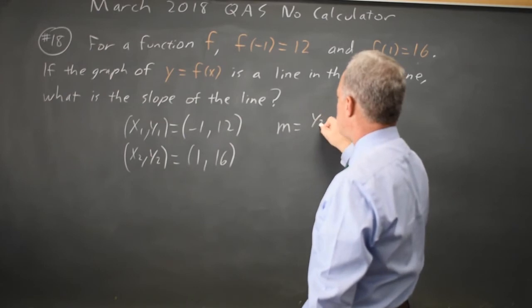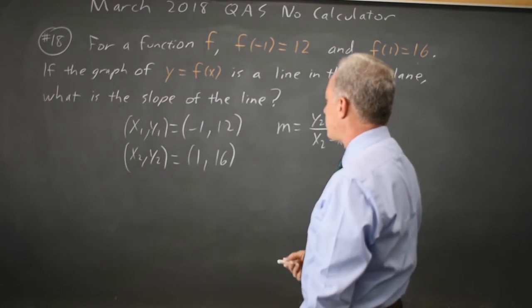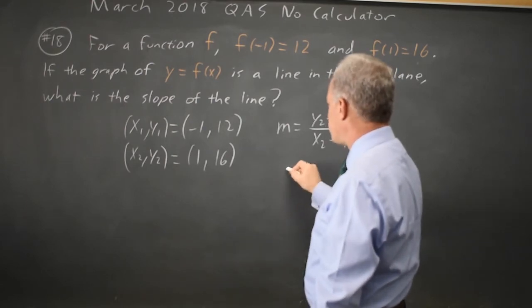m equals y₂ minus y₁ over x₂ minus x₁. Make sure you don't flip it—the y's go in the numerator.